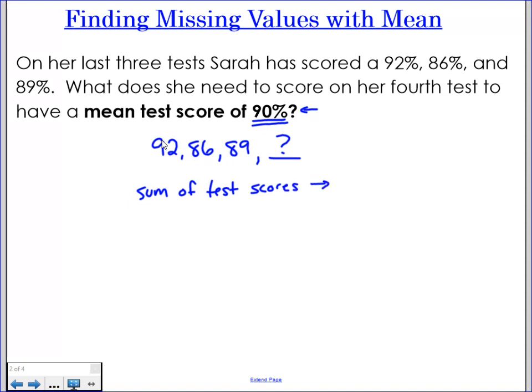okay, so the sum of the test scores would be whatever my mean is times the one, two, three, four numbers that I have. 90 times four is equal to 360. So all four of my values have to add up to equal 360. Okay, so that's the first thing we need to figure out.